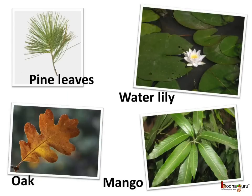Not just the size, even the shapes are different, like the long and thin leaf in the grass, needle-like shape in the pine, circular shape in the water lily, etc. Some leaves have smooth edges like in the banana, and others such as in the oak have jagged edges. So there are many varieties of leaves, but the basic structure of all the leaves is the same.